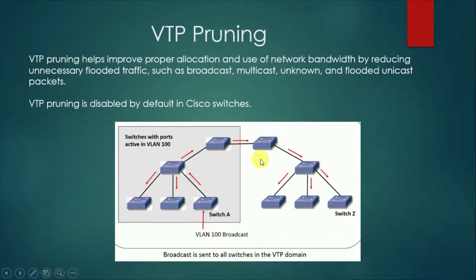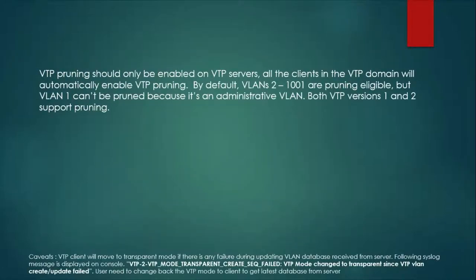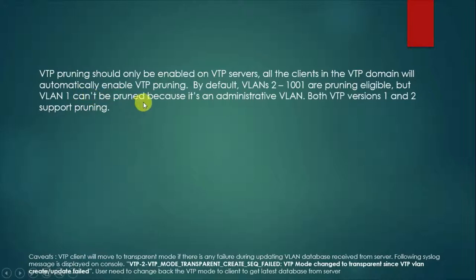VTP pruning should be enabled on the VTP server, and all the clients in the VTP domain will automatically enable VTP pruning. By default, normal range VLANs are pruning-eligible. Both VTP version 1 and version 2 support pruning. VTP pruning can only be enabled on the server side and it will automatically replicate to all the clients in the VTP domain, and it can only be implemented on normal range VLANs.